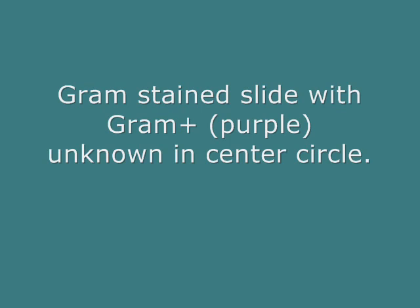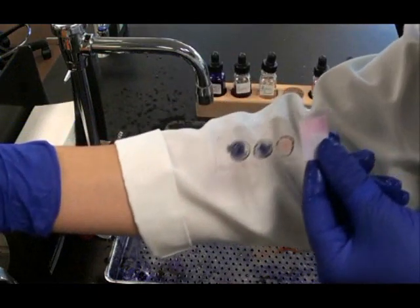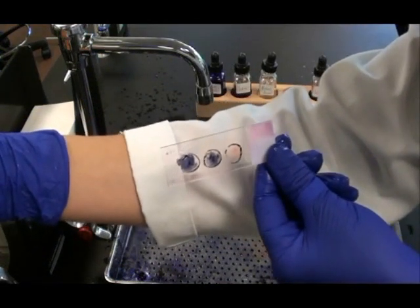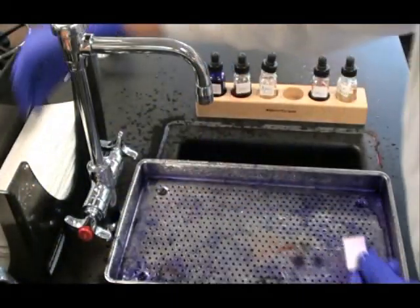I'd also like to show you an example of another slide that I prepared with a gram positive unknown. You see my positive control on the left, my negative control on the right, and this unknown is purple like the positive control.